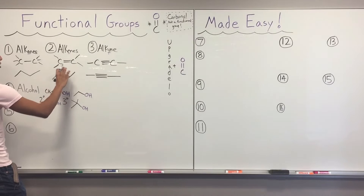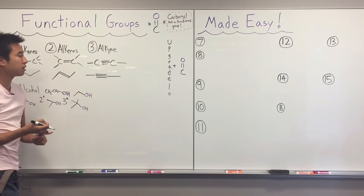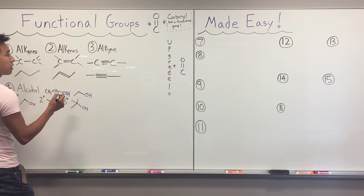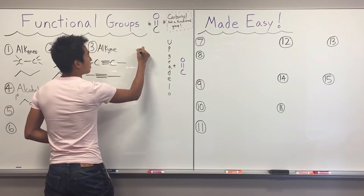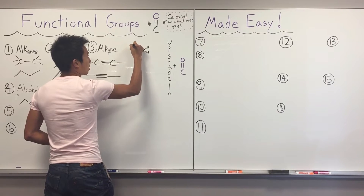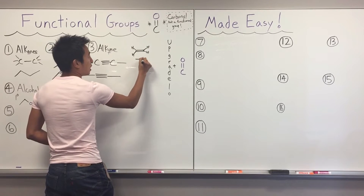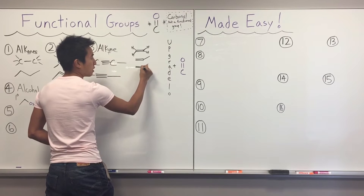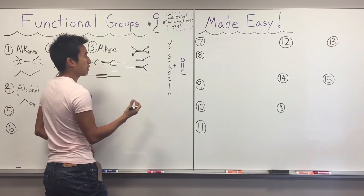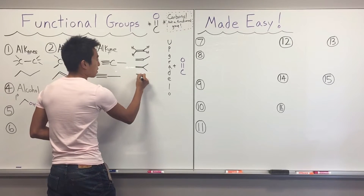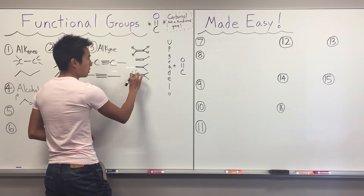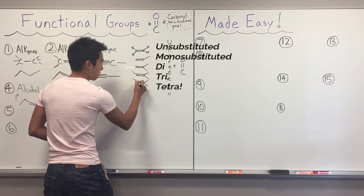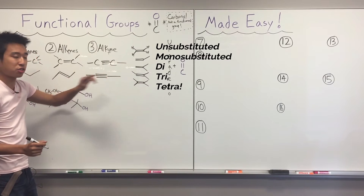Alkenes can also be classified different ways. You can have an unsubstituted alkene — just hydrogens, no carbons coming off the four corners. A monosubstituted alkene has one carbon group. A di-substituted alkene has two carbons coming off the alkene carbons. A tri-substituted alkene has three carbons coming off. And a tetrasubstituted alkene has all four positions filled with carbon groups.